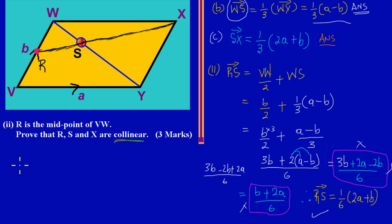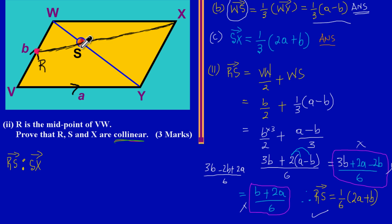Now we have our answer for the distance R to S. What we are proving is that the ratio of RS to SX confirms collinearity. So I'm checking the ratio of R to S compared to S to X — because I want to see if the distance from R to S is proportionally related to the distance S to X, meaning they share a common ratio.